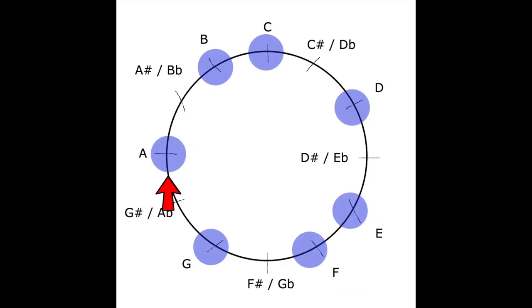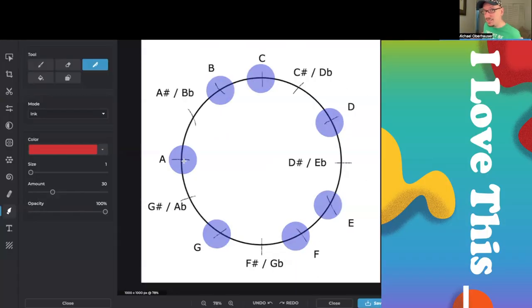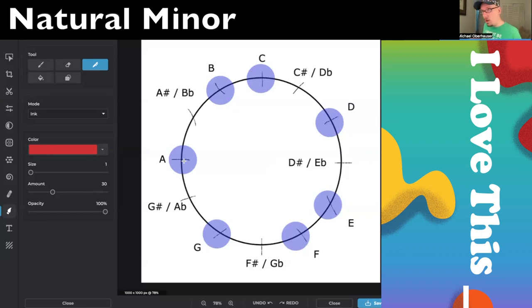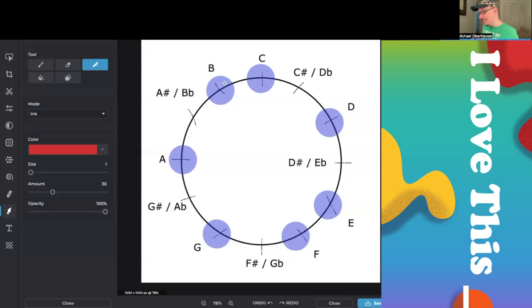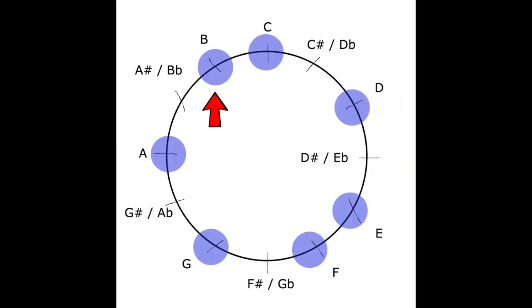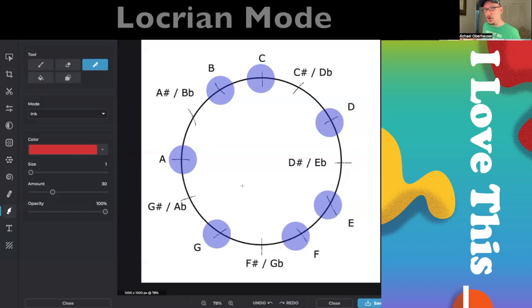If we start on A, that is the natural minor scale. Or if we're talking about modes, that is the Aeolian mode. And then we've got everyone's favorite, the one that happens when you start on the seventh scale degree of a major scale. The Locrian mode.